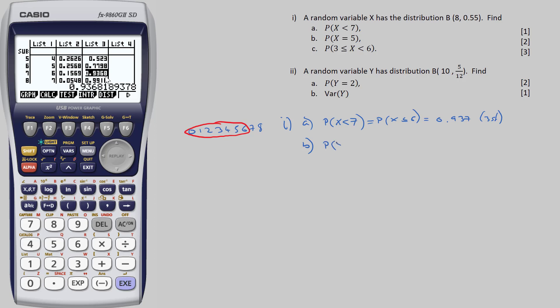Question B asks for the single probability when x is equal to 5, which is our value in list 2 next to the 5, or 0.2568, which we can round to 0.257 to 3 significant figures.